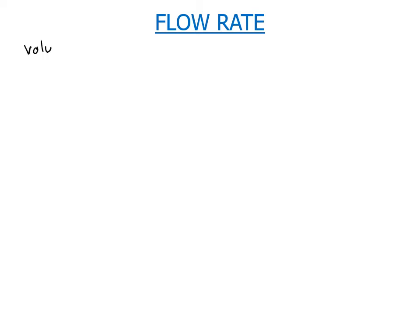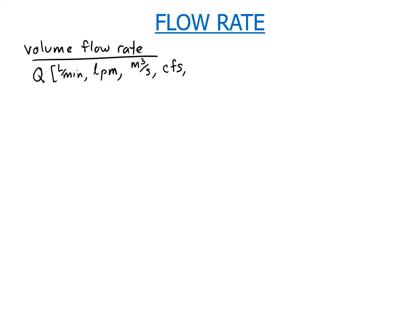We'll talk about two different types of flow rates. The first is the volume flow rate, and I'll use the variable Q to refer to that. It can be in units of things like liters per minute (LPM), cubic meters per second, CFS (cubic feet per second), SCFM (standard cubic feet per minute), or ACFM (actual cubic feet per minute). This depends on whether we're reporting the volume under actual conditions or converting to standard conditions — standard temperature and pressure.